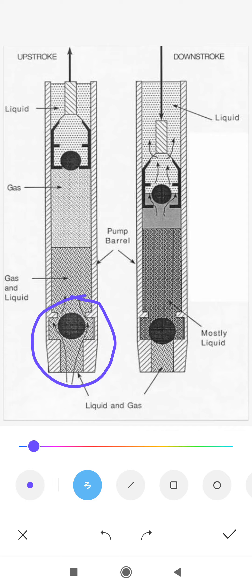This ball valve will prevent the bi-directional flow of fluids through it. It will allow the fluid to come from the perforation to the bottom valve into the pump, and it will not allow the fluid to go back into the formation.